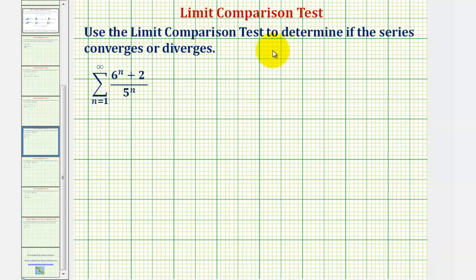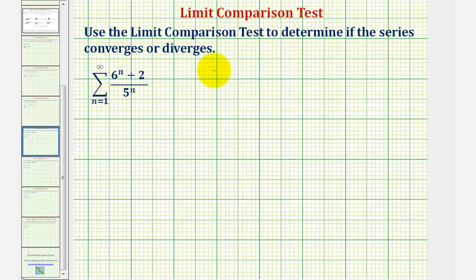We want to use the limit comparison test to determine if the given infinite series converges or diverges. We'll begin by determining what infinite series the given series resembles and determine if that series converges or diverges. Looking at the given series, notice how it resembles the series where we would have the summation from n equals one to infinity of six raised to the power of n divided by five raised to the power of n.